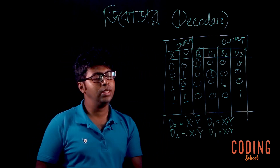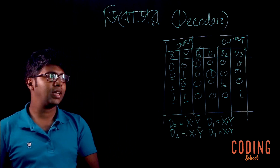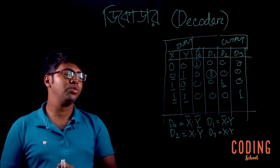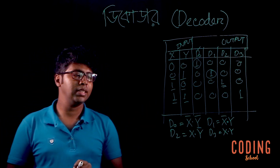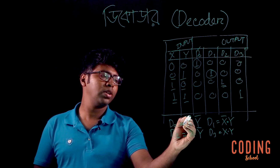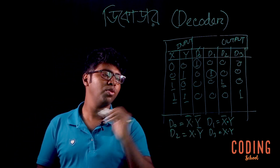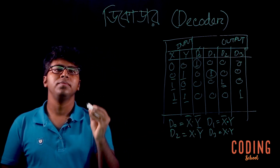Now we need to draw the circuit diagram. We need to implement this circuit diagram for the decoder.